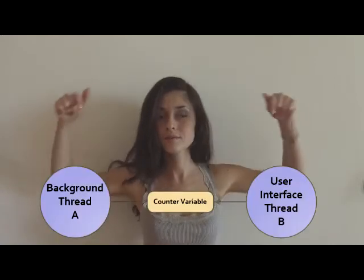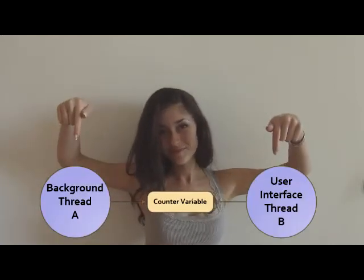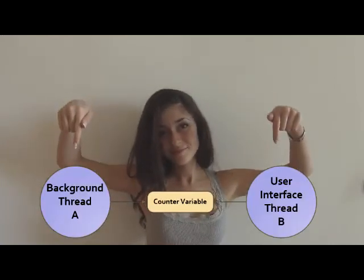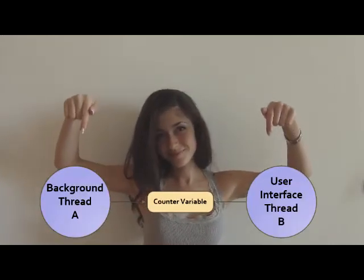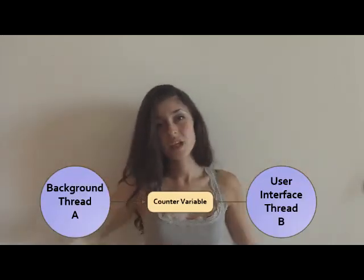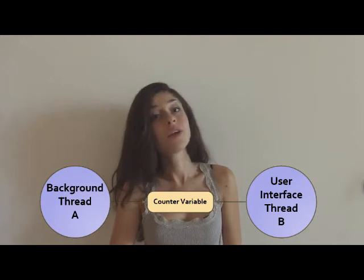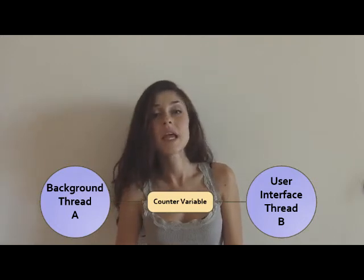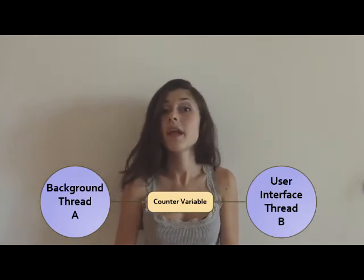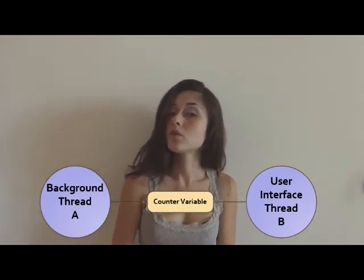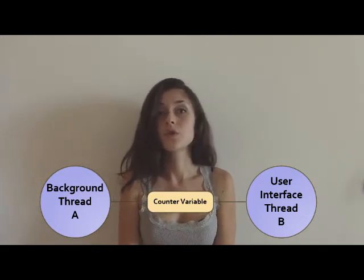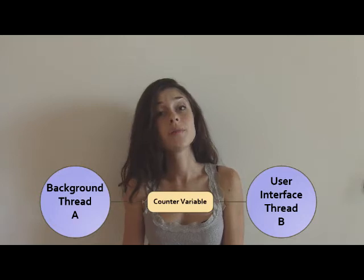Let's say you had an example like this. The counter variable is updated by thread A, but also displayed to the user by thread B.